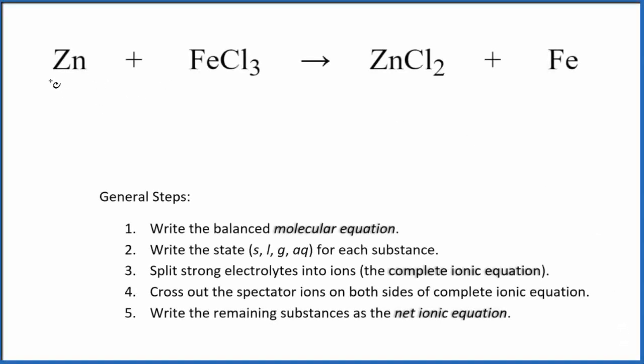Let's write the balanced net ionic equation for zinc plus FeCl3. So we have our zinc, solid zinc, and then we have iron chloride.